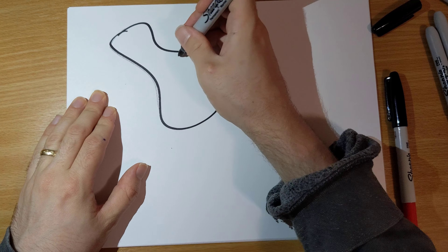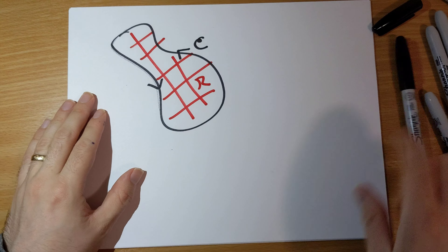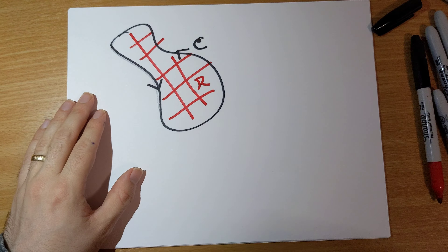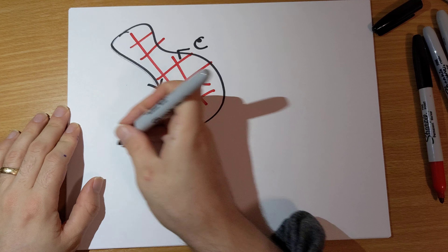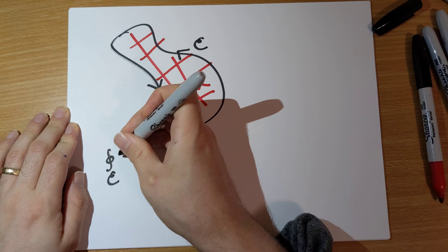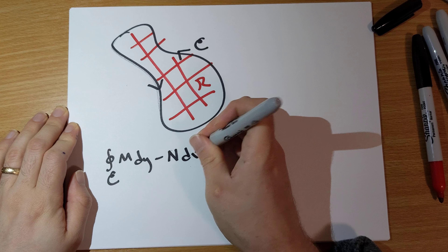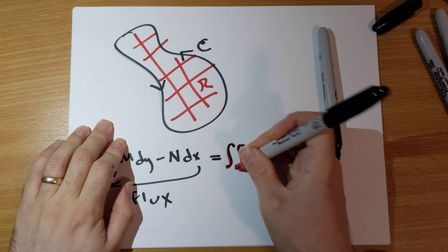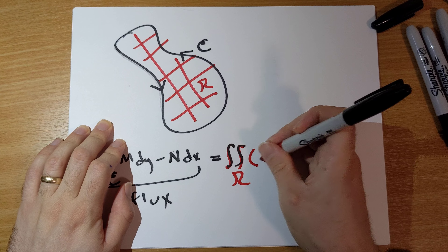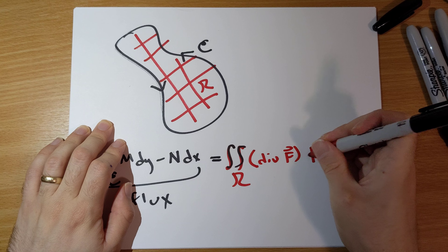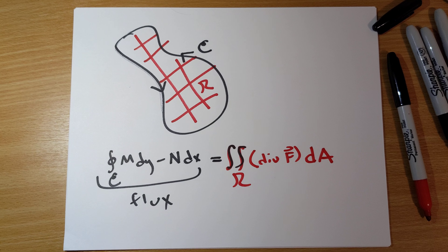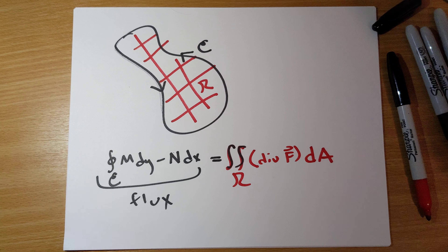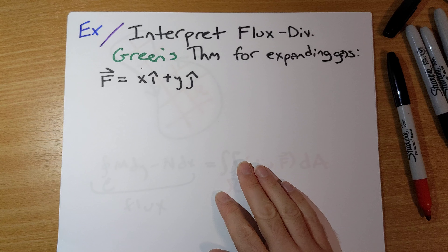The picture we can draw should be essentially the same picture we drew for the circulation-curl version of Green's theorem. We have a counterclockwise-oriented boundary curve C enclosing a region R. Green's theorem says that the integral on C of M dy minus N dx — this is the flux — equals the double integral over R of the divergence of F over the interior.